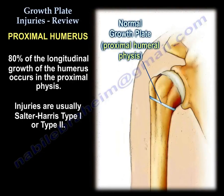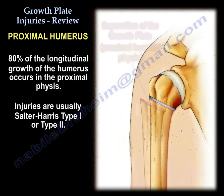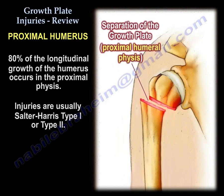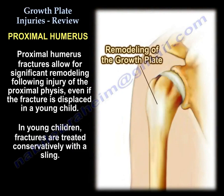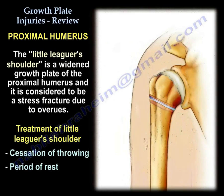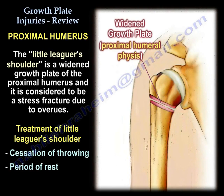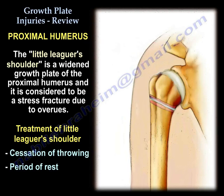Moving on to the proximal humerus: 80% of the longitudinal growth of the humerus occurs at the proximal physis. Injuries are usually type 1 or type 2. In a young child, the proximal humerus fracture allows for significant remodeling following injury, even if significantly displaced; therefore, we treat them conservatively with a sling. Little leaguer's shoulder is a widened growth plate of the proximal humerus, considered a stress fracture from overuse. Treatment is cessation of throwing and a period of rest.